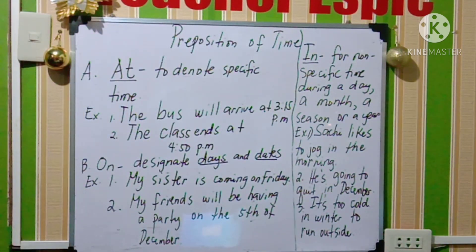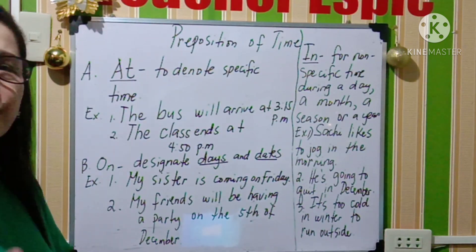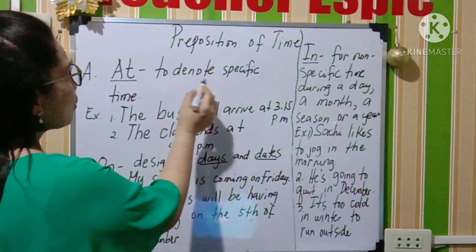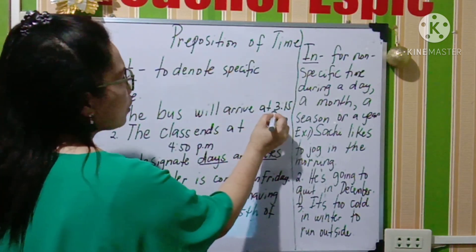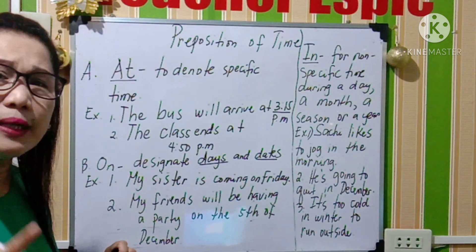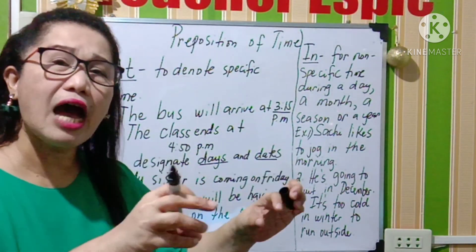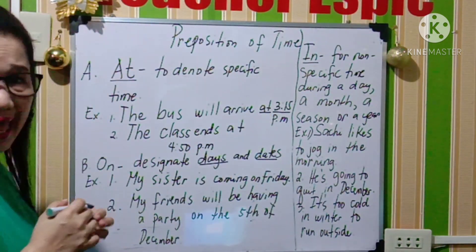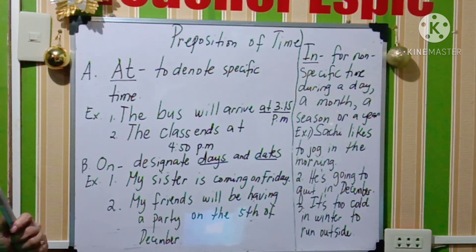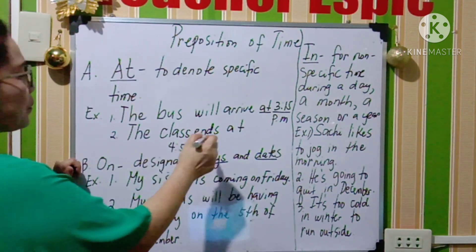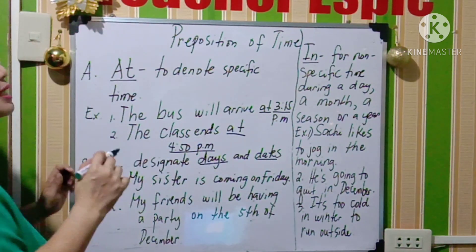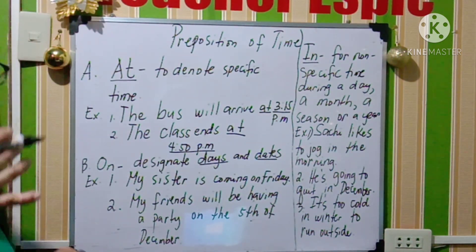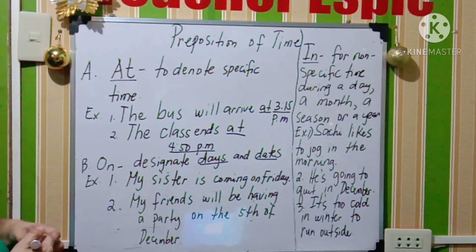Like for example, the bus will arrive at 3:15 — to denote specific time — 3:15 p.m. or 3:15 in the afternoon. Meron po siyang exact time, so gumamit tayo ng preposition na at. Another one that denotes specific time: the class ends at 4:50 p.m. So gumamit po tayo ng at — ito po ang tinatawag nating specific time. May umaga, may hapon. So ito po yung paggamit ng at when we are talking about time.